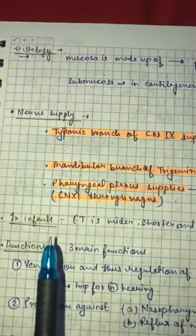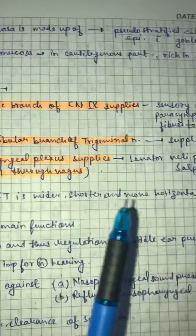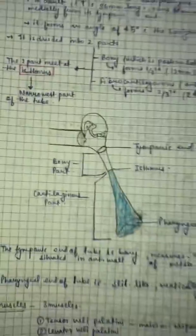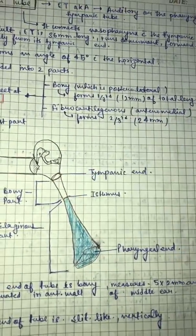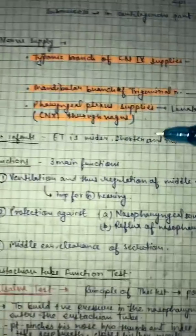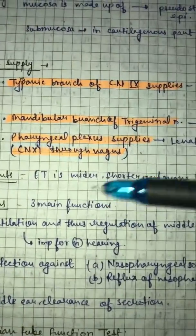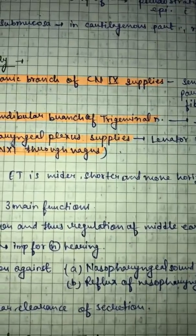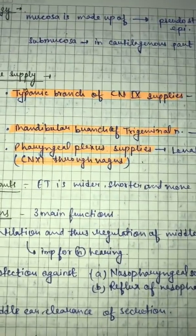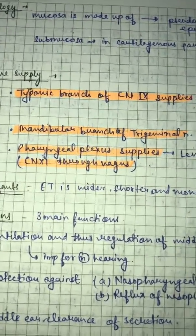Then in infants, Eustachian tube is wider, shorter and more horizontal. Like we have seen in adults, it is long and narrow. So when we see infants, Eustachian tube is quite short, horizontal, wide, which is responsible for many infections because it is very small and wide. So nasopharynx to middle ear, infection.